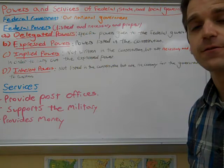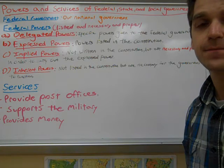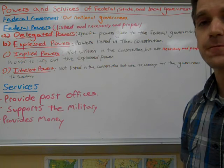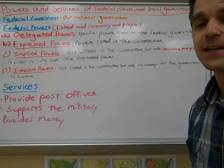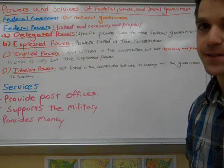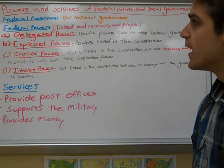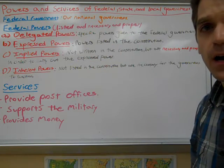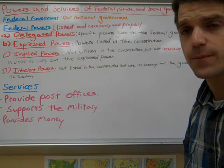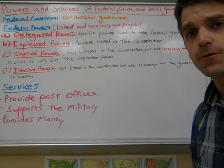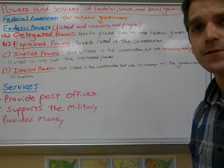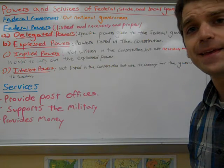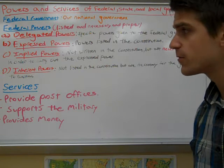Our national or federal government is called the United States and is seated in Washington, D.C. There are 50 state governments in the United States — 50 states, 50 governments. The federal government has the most types of powers, but as you'll see, more of the laws and responsibilities fall within the state and local governments.